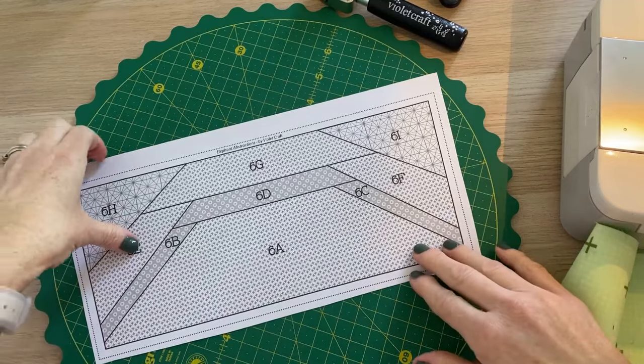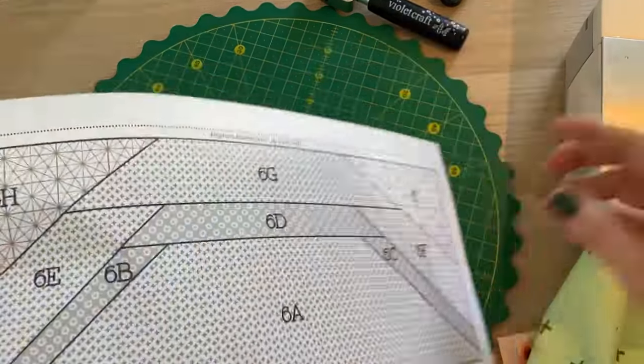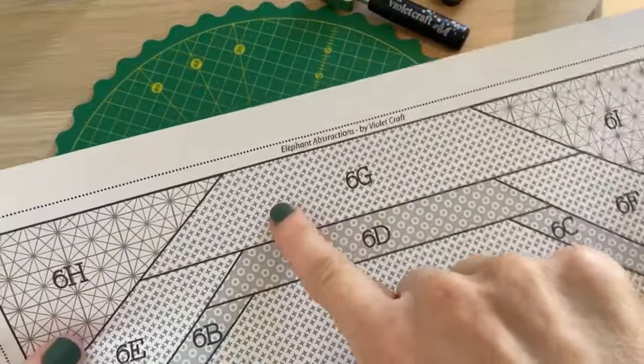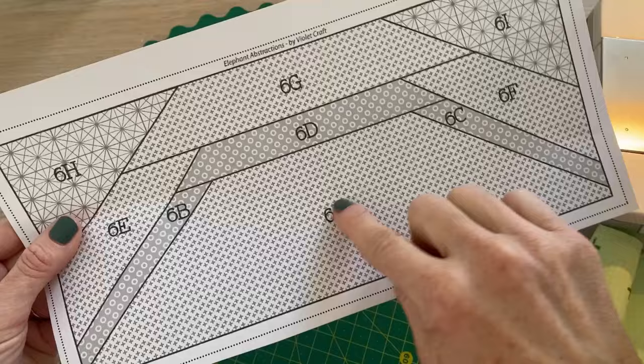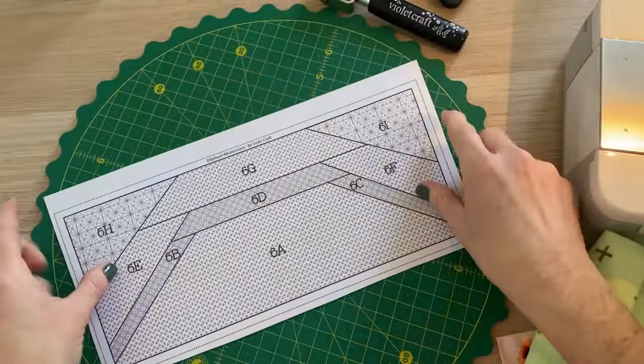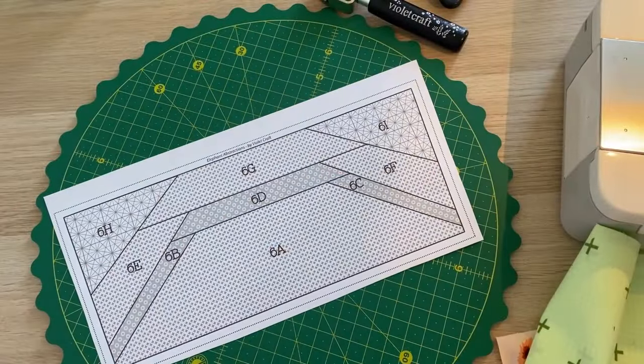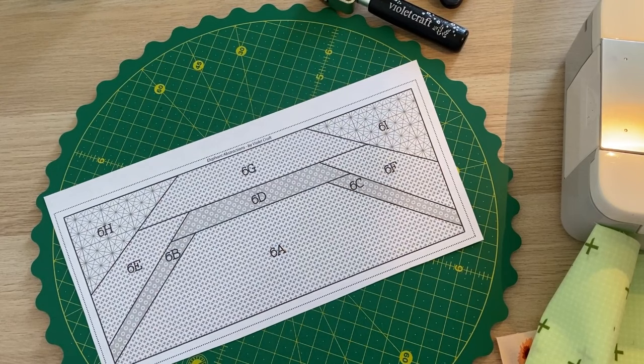This is the elephant abstractions pattern. If we look right here, we can see Elephant Abstractions by Violet Craft. This is template number six. I am going to be demonstrating how I foundation paper piece.